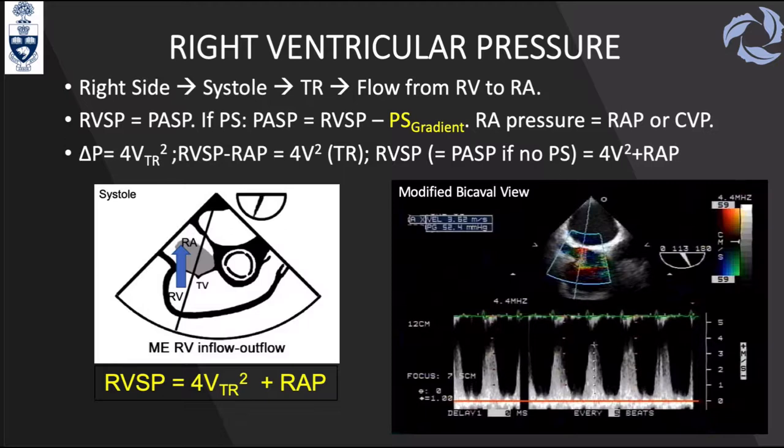Important caveats: remember what happens when you have tricuspid regurgitation with a PDA or VSD — things will be different. Also, RVSP is not reliable with RV failure, RV infarction, or RV obstruction. Additionally, if there is pulmonary stenosis, you need to subtract the pulmonary stenosis gradient between the right ventricle and the pulmonary artery; otherwise the formula is inaccurate.